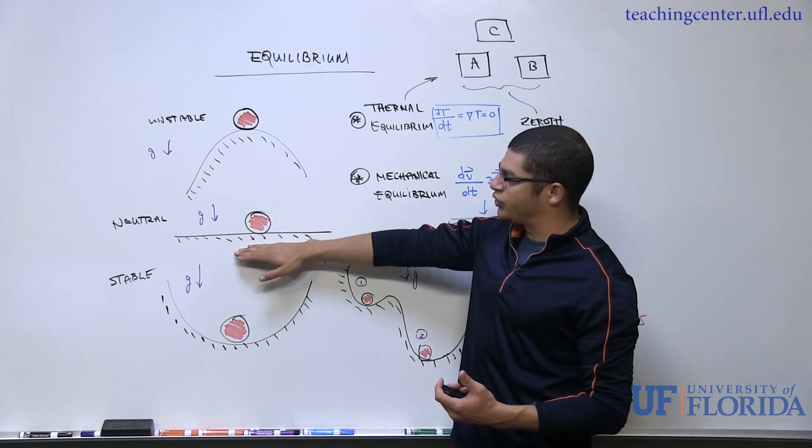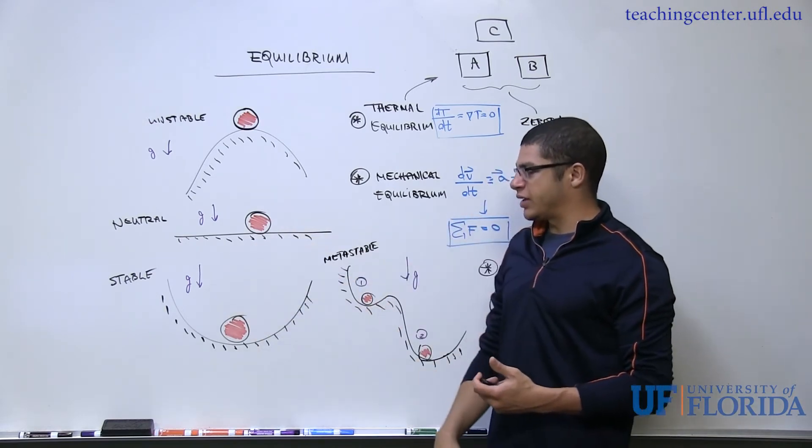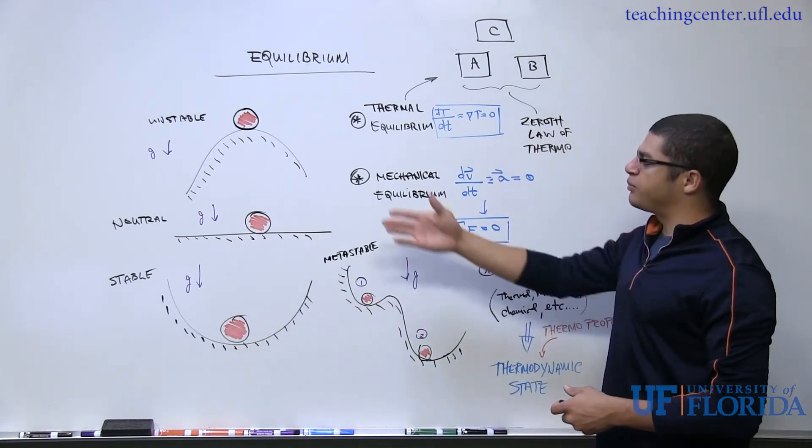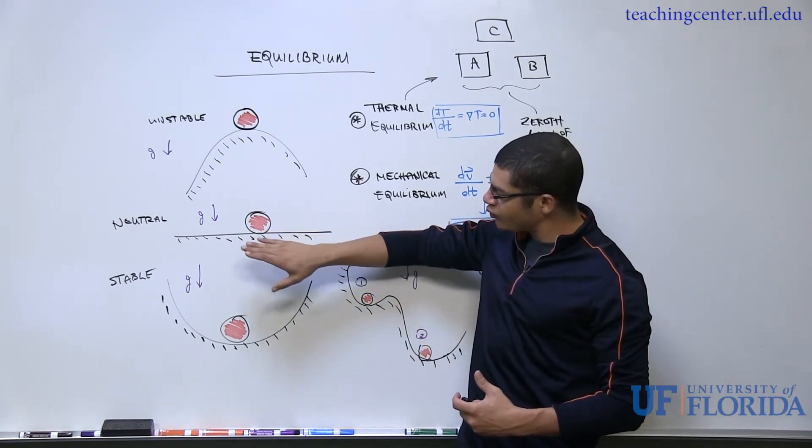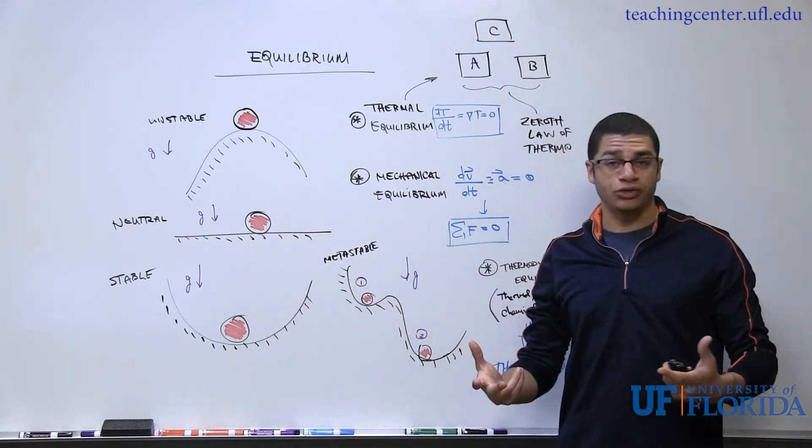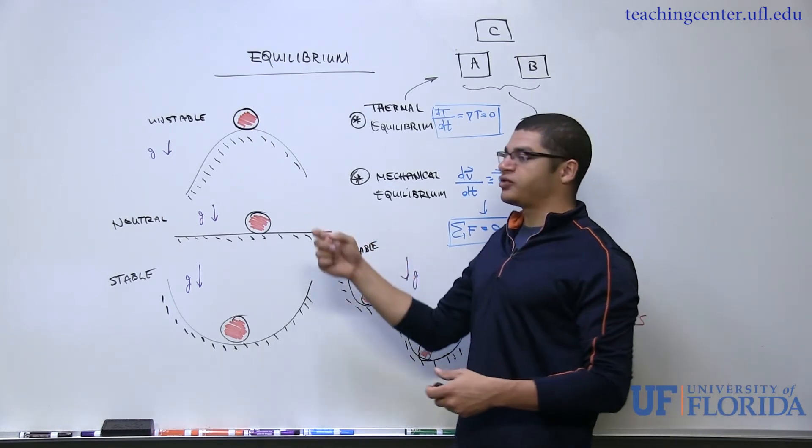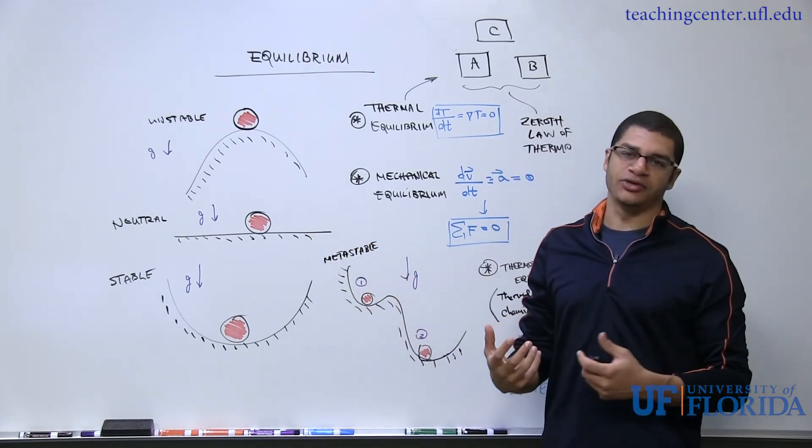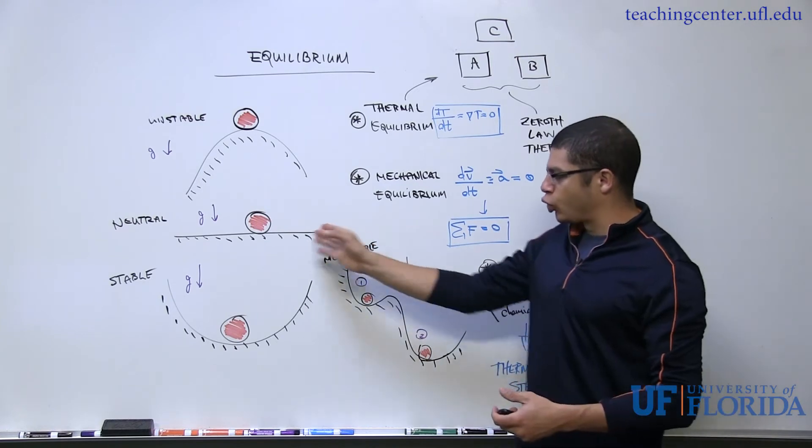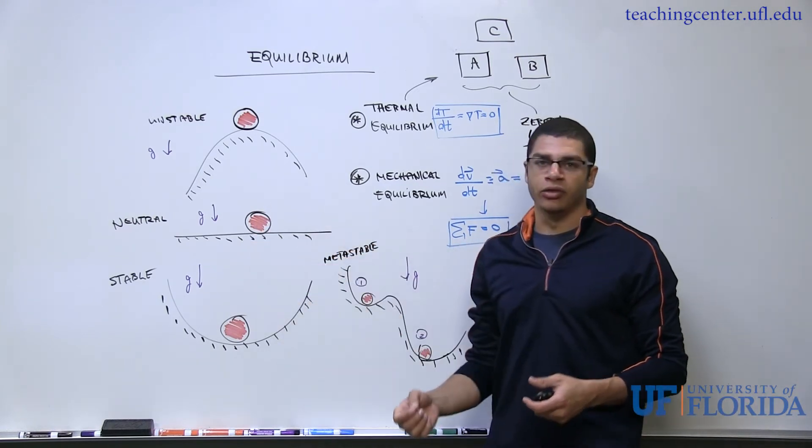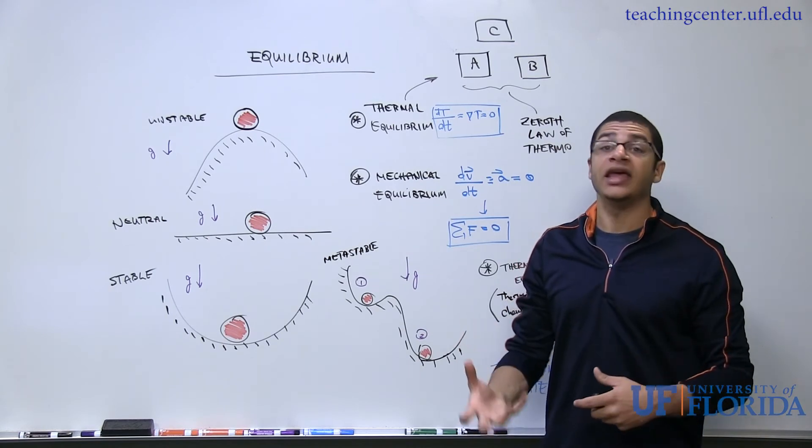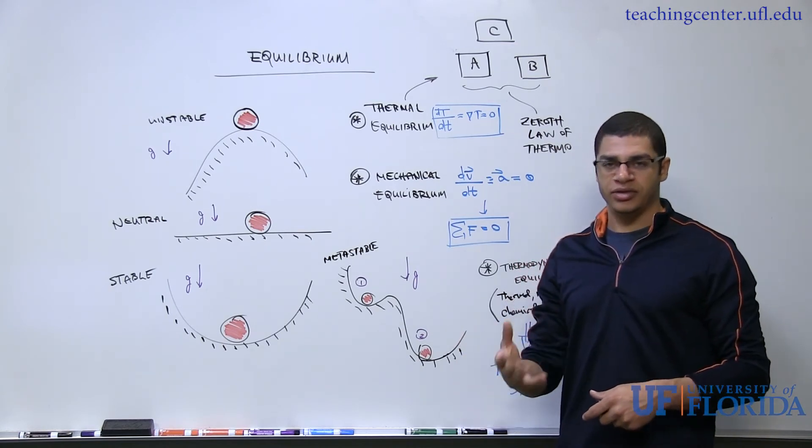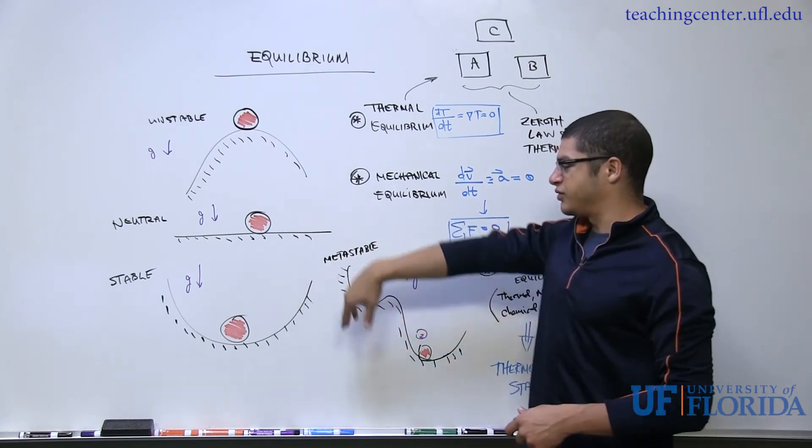Here's an example of what's called neutral equilibrium. Say this level right here is representative of the potential energy of the system. If I perturb the system, nothing has really changed in terms of potential energy. It will roll and if I account for friction, it will find a new spot, but on the same level. So nothing interesting really has happened if I'm considering the potential energy of the system relative to some datum.